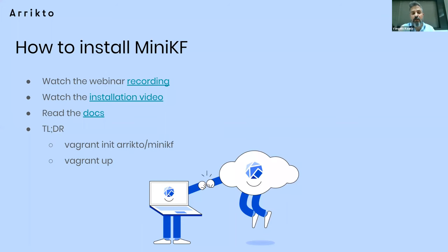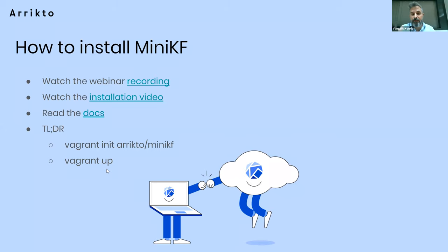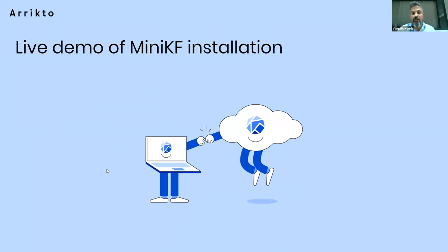This presentation is about deploying MiniKubeflow and running a well-known example on top of it with advanced data management from Rok. How do you install MiniKubeflow? There's a previous webinar recording, installation video, and documentation. The short version is: you use Vagrant to initialize a new virtual machine, start it, and that's it. I'll be switching desktops and spinning up the virtual machine now.